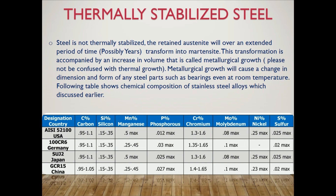The following table shows the chemical composition of stainless steel alloys discussed earlier. In the USA: Carbon 0.95–1.1%, Silicon 0.15–0.35%, Manganese 0.5% max, Phosphorus 0.012% max, Chromium 1.3–1.6%, Molybdenum 0.08% max, Nickel 0.25% max, Sulfur 0.025% max.